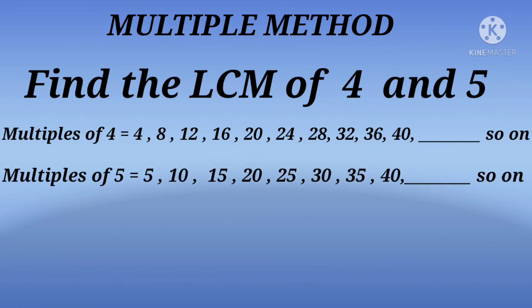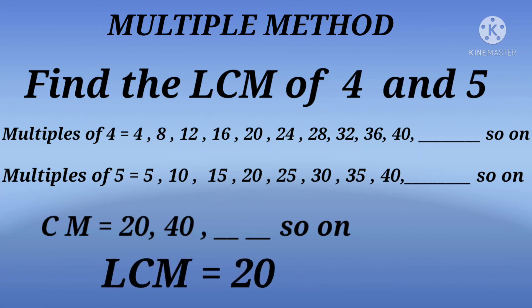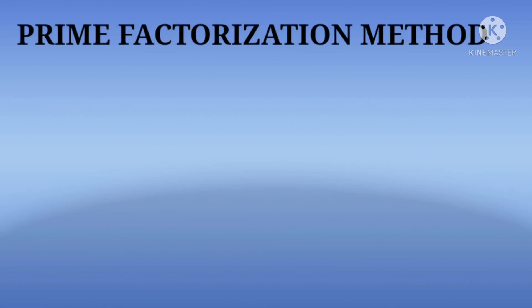The multiples of 5 are: 5, 10, 15, 20, 25, 30, 35, 40, and so on. The common multiples between the two numbers are 20, 40, and so on. The smallest common multiple is 20, so the LCM of 4 and 5 is 20. The second method is the Prime Factorization Method.